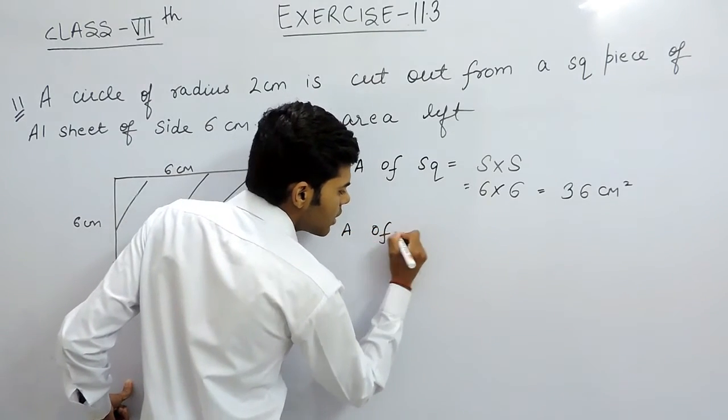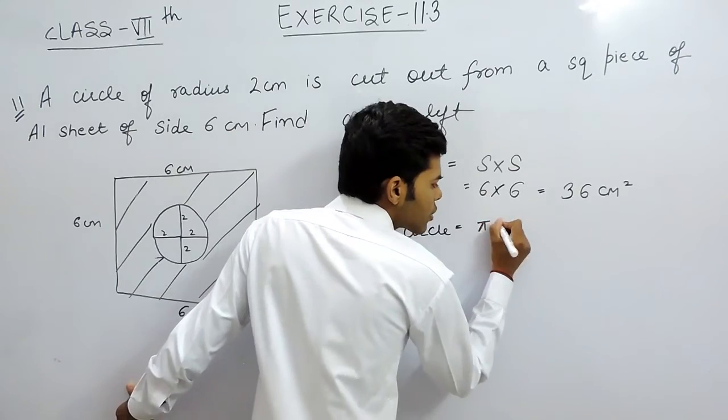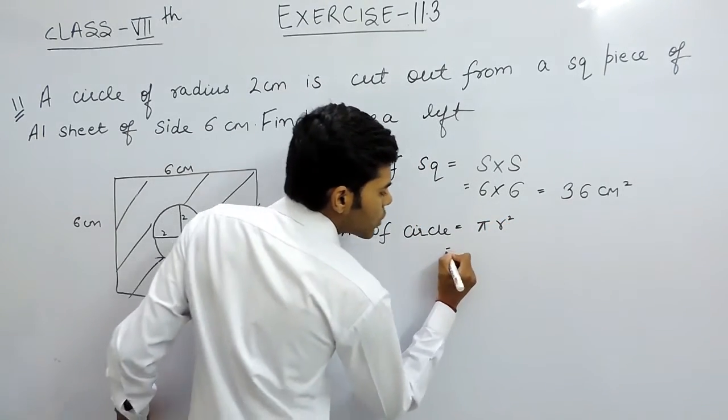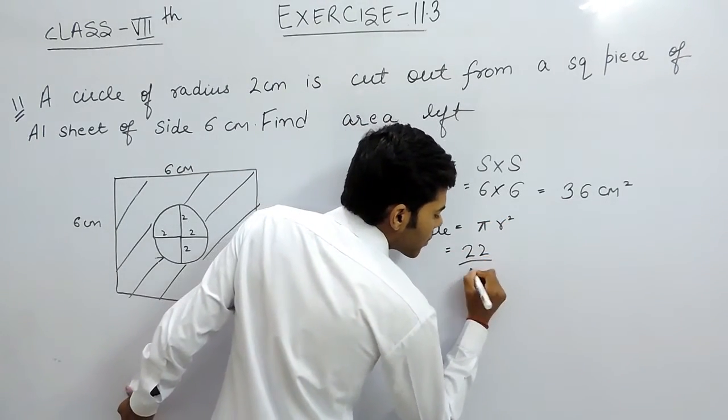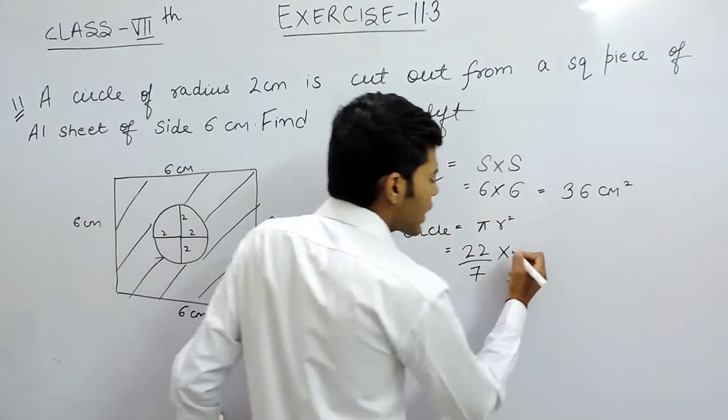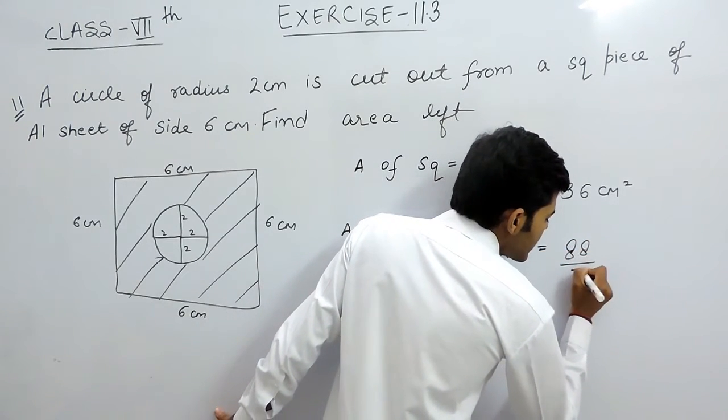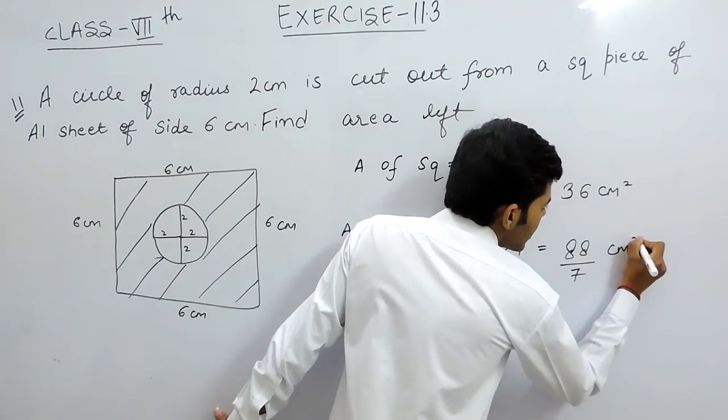Now, area of circle equals to pi r square, that will be equal to 22 by 7 multiplied by r square. r is 2, so r into r, that will be 4, that will be 88 by 7 cm square.